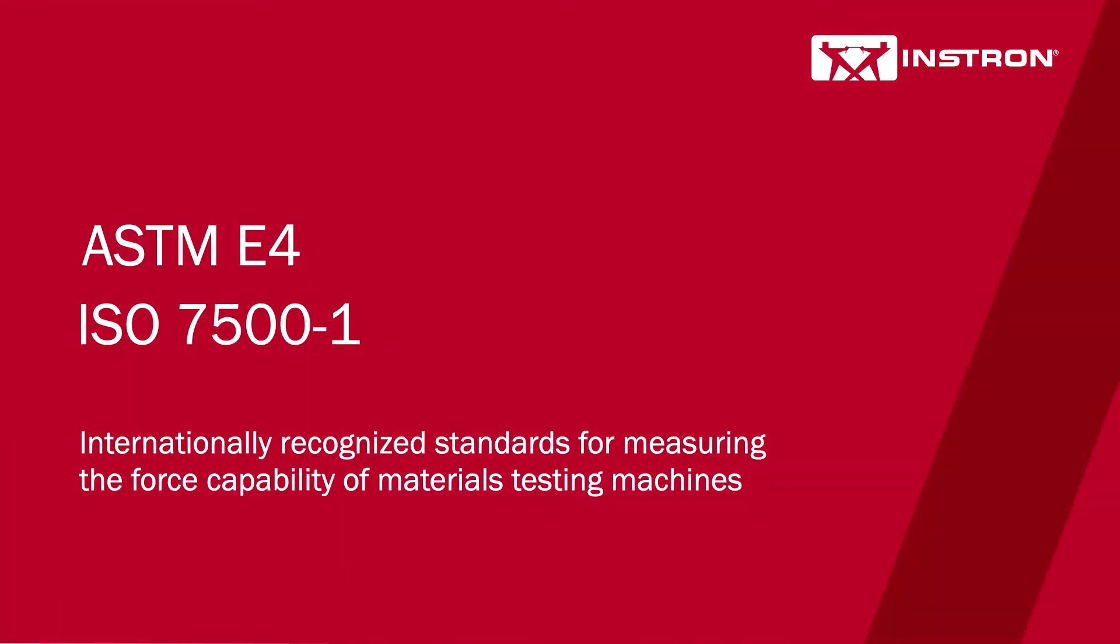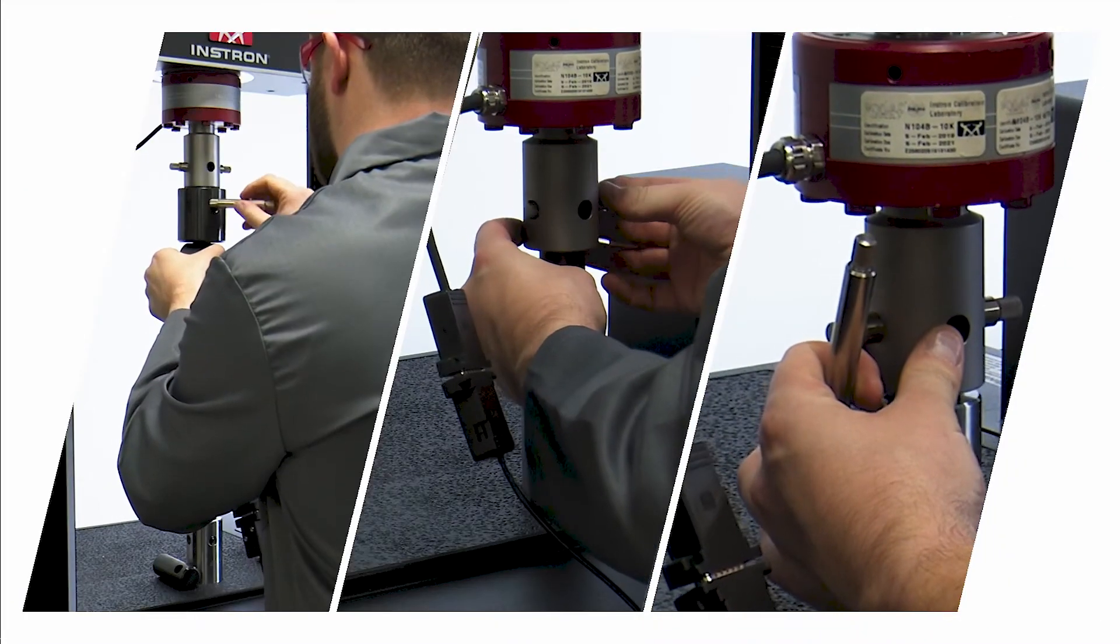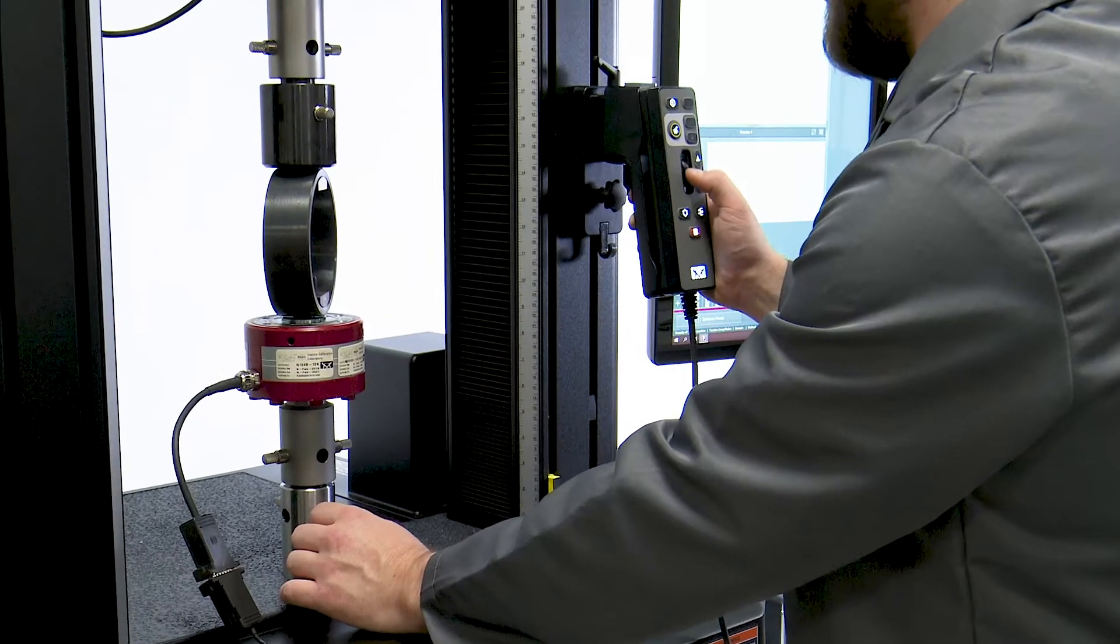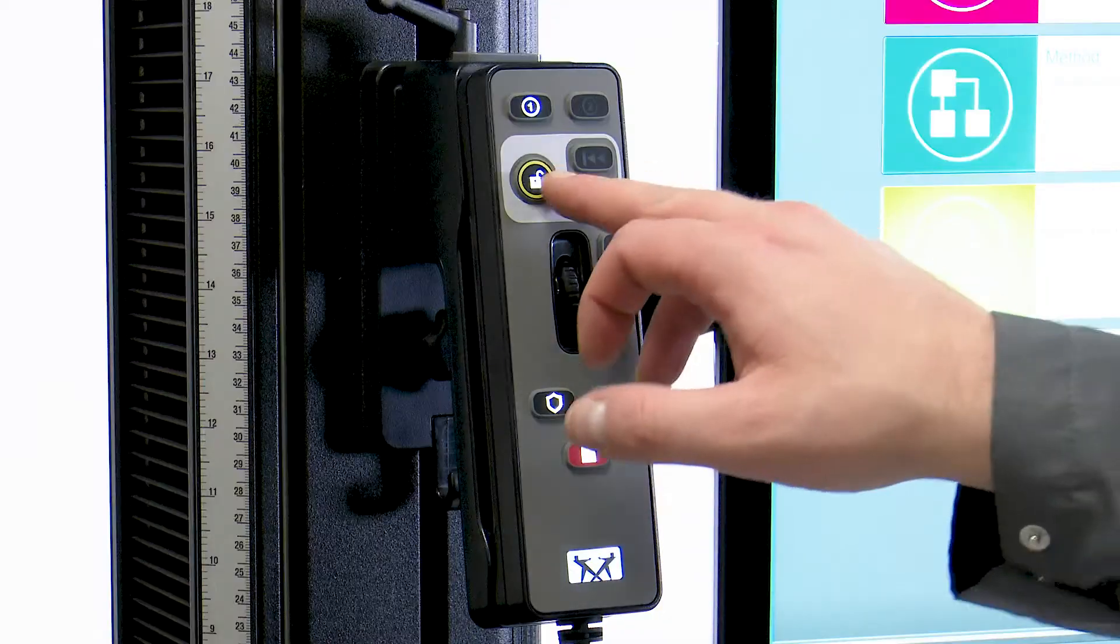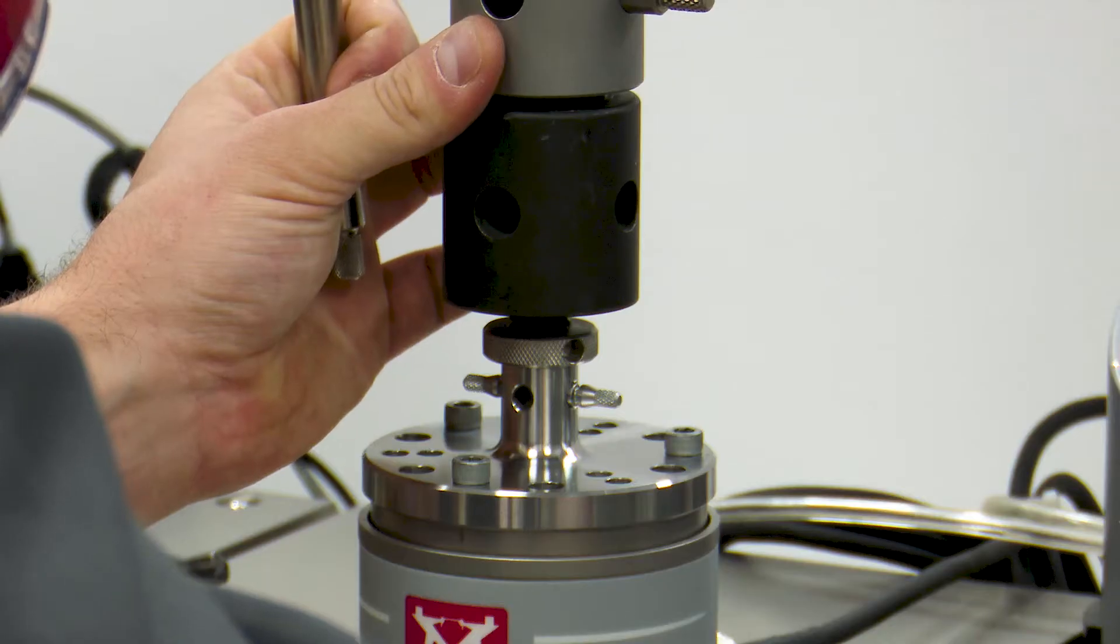Verifying equipment to either ASTM E4 or ISO 7500-1 standards is an important and low-risk way to ensure that your FORCE transducers have been calibrated properly and to reduce the risk of receiving bad data from the instrument.